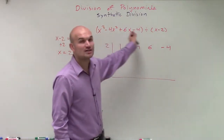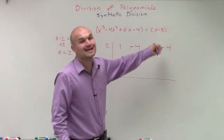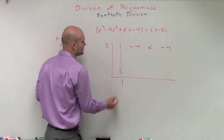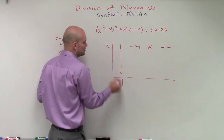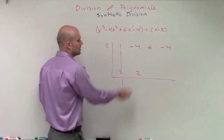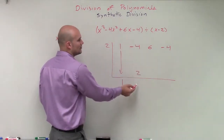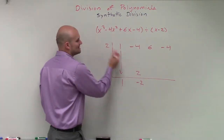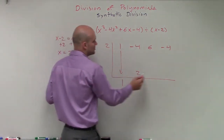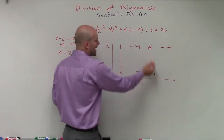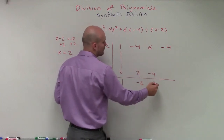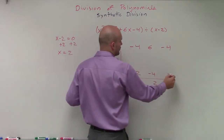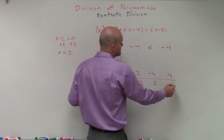We also need to include all the coefficients and our constants as well. The first step is easy — bring down the 1. Then we take 1 times 2, which is 2. Add vertically: negative 4 plus 2 is negative 2. Multiply: negative 2 times 2 is negative 4. Add vertically: 6 plus negative 4 is positive 2. Then 2 times 2 is 4. Add vertically, which gives us 0.